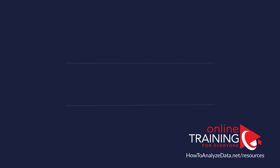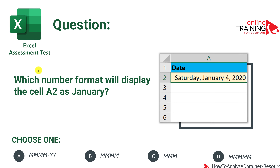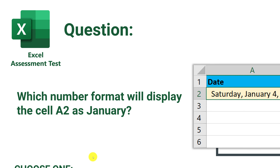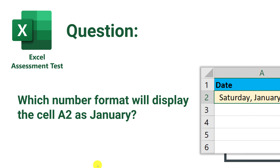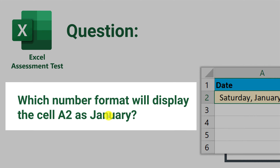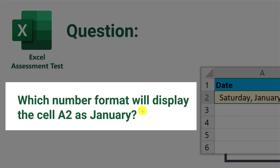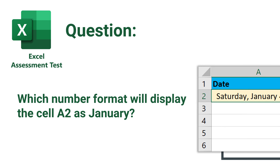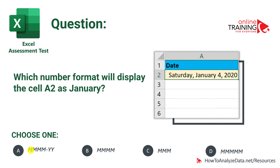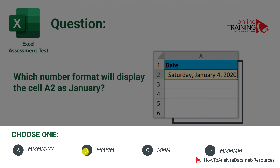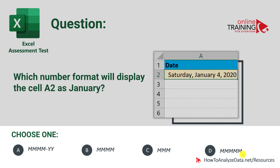Let's see how well you know Excel data formatting features, specifically custom formatting. Here's the question: which number format will display the cell A2 as 'January'? There are four choices: A is MMMM-YY, B is MMMM, C is MMM, and D is MMMMM. Which one do you think is the right one?